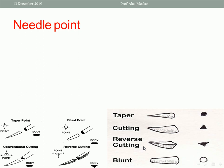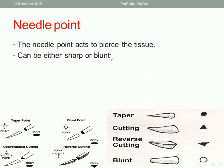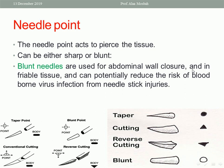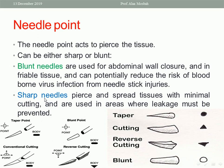Blunt needles are used for abdominal wall closure and friable tissue, and they can potentially reduce the risk of blood-borne virus infection from needle-stick injuries. Sharp needles pierce and spread tissue with minimal cutting and are used in areas where leakage must be prevented, because there is minimal cutting.